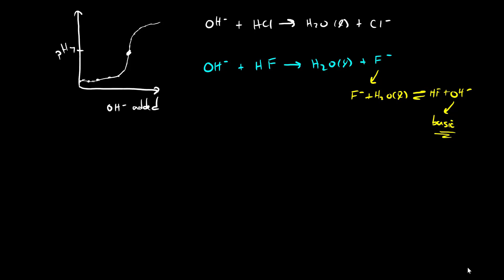That's only true when we reach the equivalence point. During the titration, as we are adding hydroxide, we are converting some of our hydrofluoric acid over to fluoride. So we are taking some of our weak acid and converting it to a weak base. During this titration, between the beginning and the equivalence point, we're creating a buffer. Remember, a buffer is a solution that contains a weak acid and its conjugate base. So during this titration, we are creating a buffer, and that actually makes calculating the pH a lot easier.